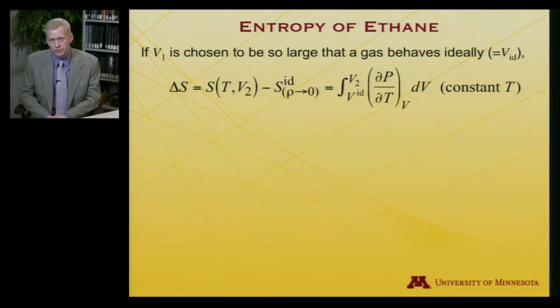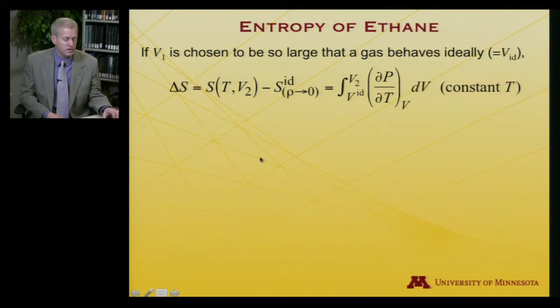And moreover, if I choose my initial volume to be so large that my gas is very, very dilute, then it ought to behave as an ideal gas. And I can use the properties of ideal gases to establish what the entropy ought to be at that very large volume or, alternatively, very low density, so as the density goes to zero. So in that case, delta S, which is going to be the entropy at the new volume compared to the entropy at almost infinite volume, is this integral from ideal volume to V2.